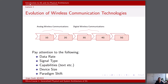In summary, the evolution of wireless communication technologies from 1G to 5G has witnessed a dramatic increase in data rates, a shift from analog to digital transmission, the introduction of advanced capabilities and services, a reduction in device size, and a significant paradigm shift with 5G as a transformative technology. Each generation has built upon the successes and limitations of its predecessors, pushing the boundaries of mobile communication and shaping the way we connect, communicate, and interact in the digital age.